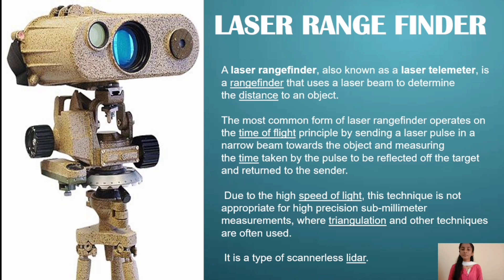Here comes our last topic — the third application: laser range finder. A laser range finder, also known as a laser telemeter, is a range finder that uses a laser beam to determine the distance to an object. The most common form operates on the time-of-flight principle by sending a laser pulse in a narrow beam towards the object and measuring the time taken by the pulse to be reflected off the target and return to the sender. Due to the high speed of light, this technique is not appropriate for high-precision sub-millimeter measurements, where triangulation and other techniques are often used. It is a type of scannerless LiDAR.